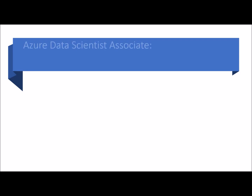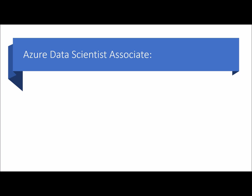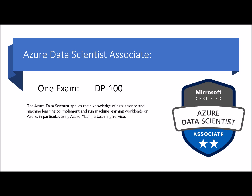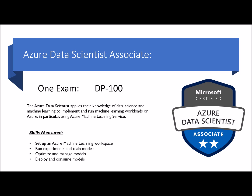The next certification is Azure Data Scientist Associate. The examination required is DP-100. The Azure Data Scientist applies their knowledge of data science and machine learning to implement and run machine learning workloads on Azure, in particular using Azure Machine Learning services. The skills measured are set up an Azure Machine Learning workspace, run experiments and train models, optimize and manage models, and deploy and consume models. On successful completion, you would be certified as Azure Data Scientist Associate.